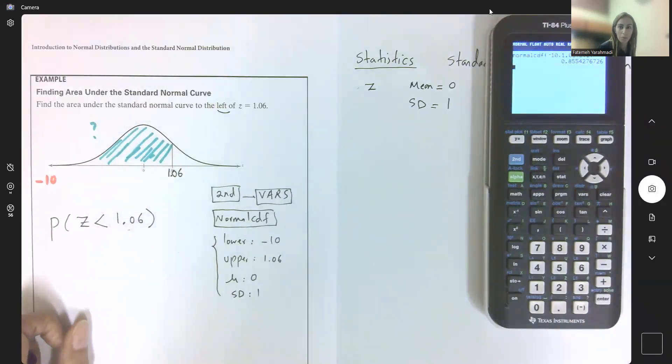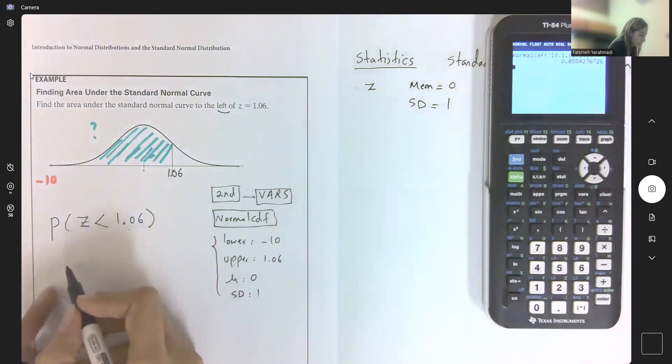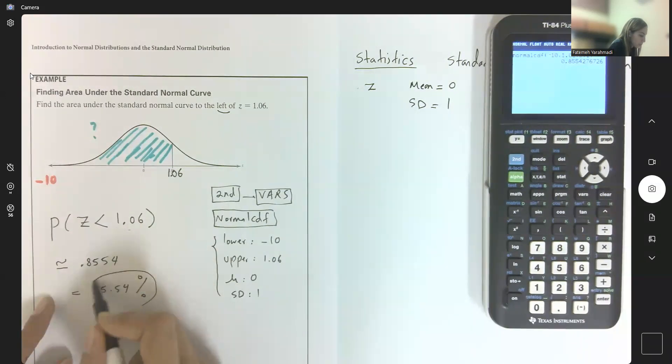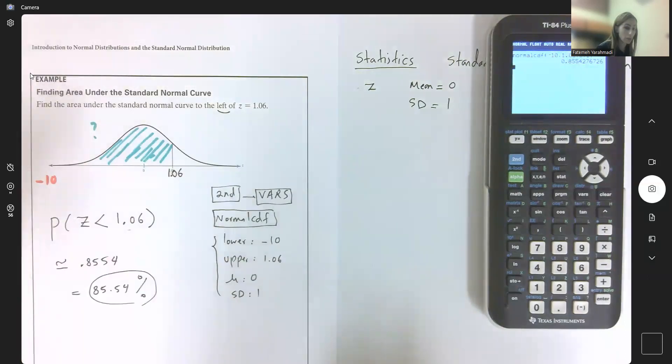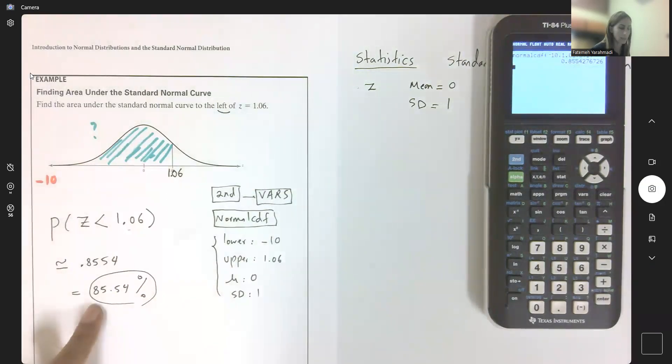Calculate this probability or area. This probability or area is about 0.855427. We need to round this, so we're going to approximate to 0.8554, or in percentage, 85.54%. This is this area. That makes sense—the whole area is 100%, and this area, which is a big chunk, is 85.54%.